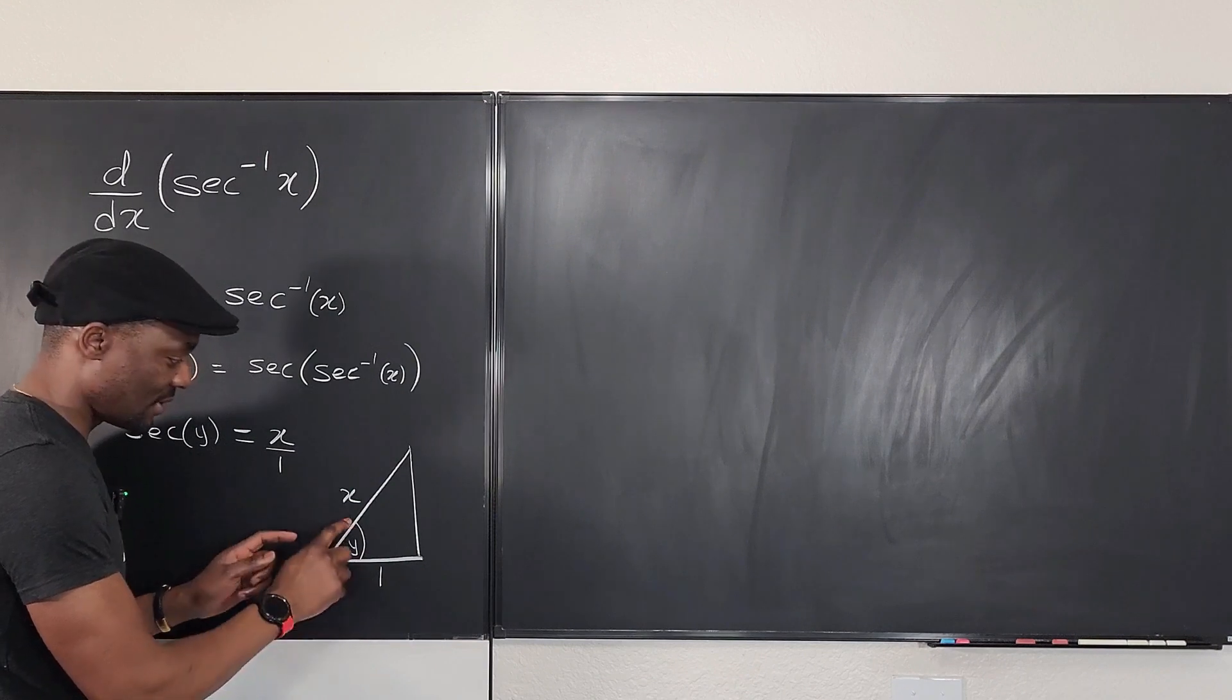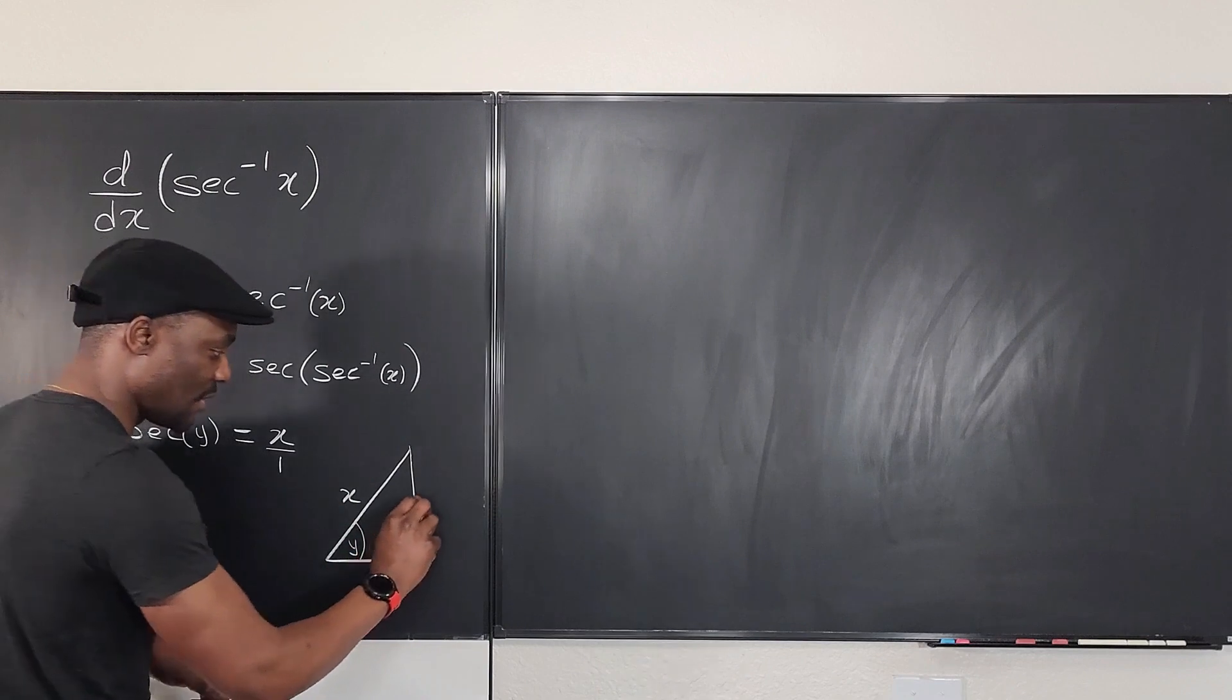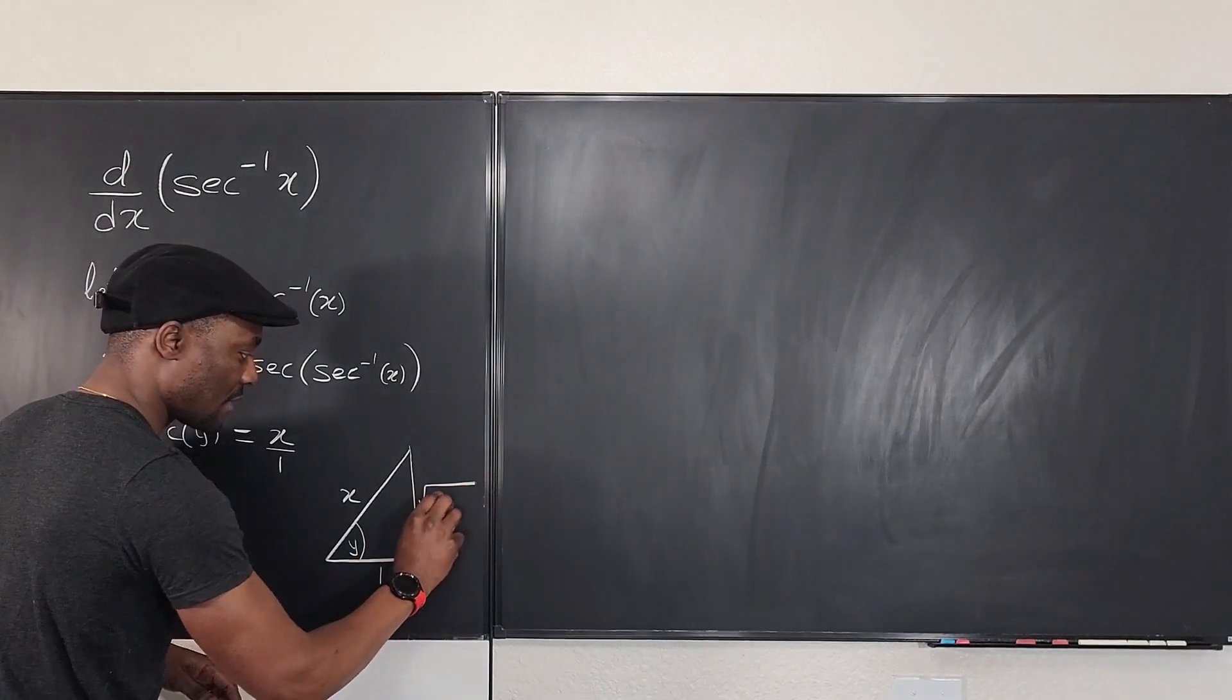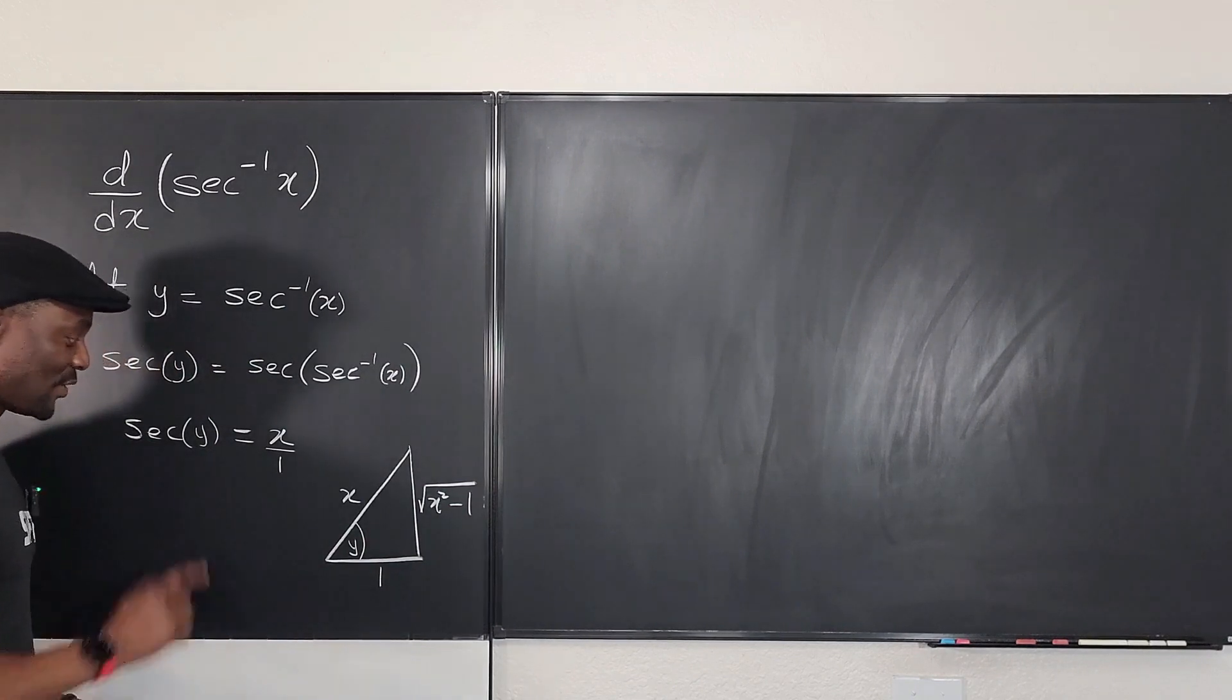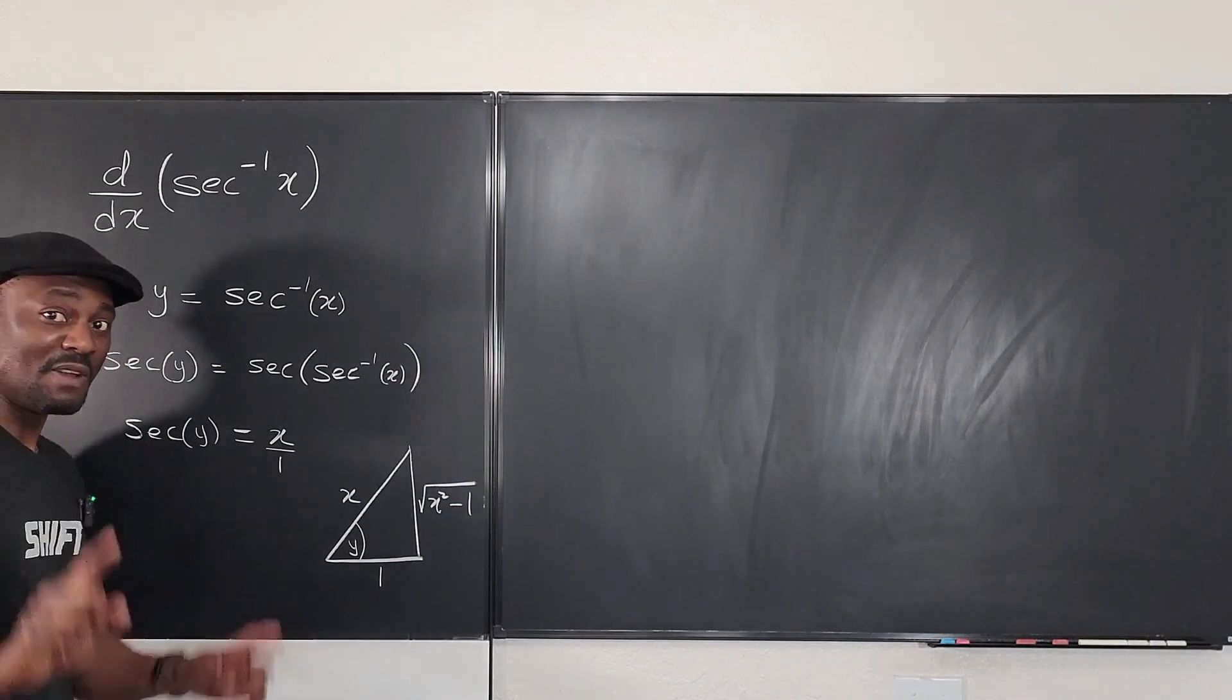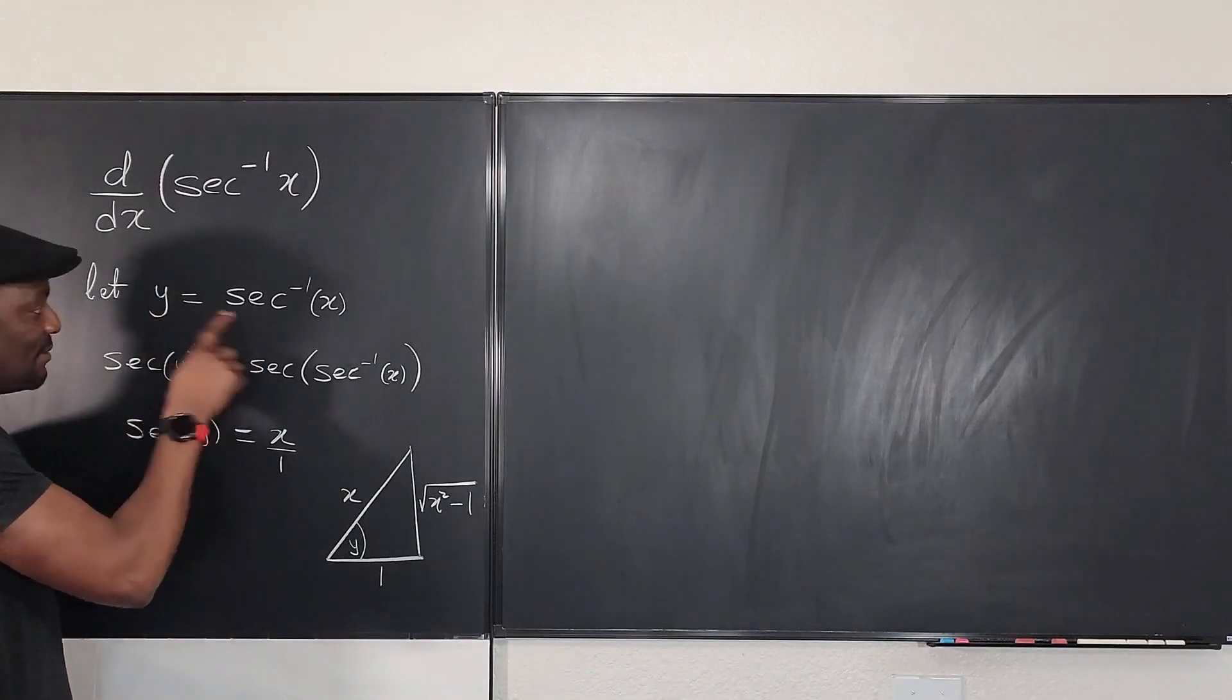What would this be? Well, Pythagorean theorem tells us that we're going to have the square of this minus the square of this, so that's going to be the square root of x squared minus one. So we have the three parts of the triangle.